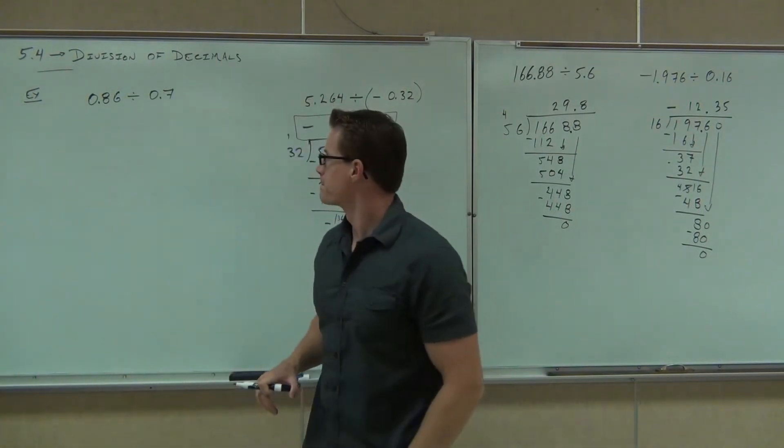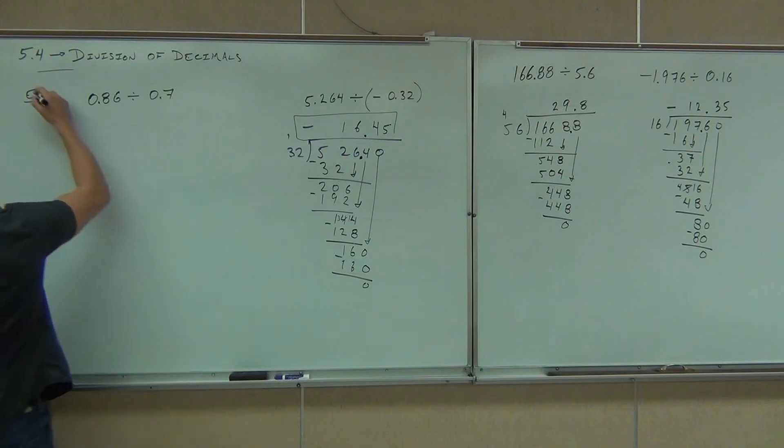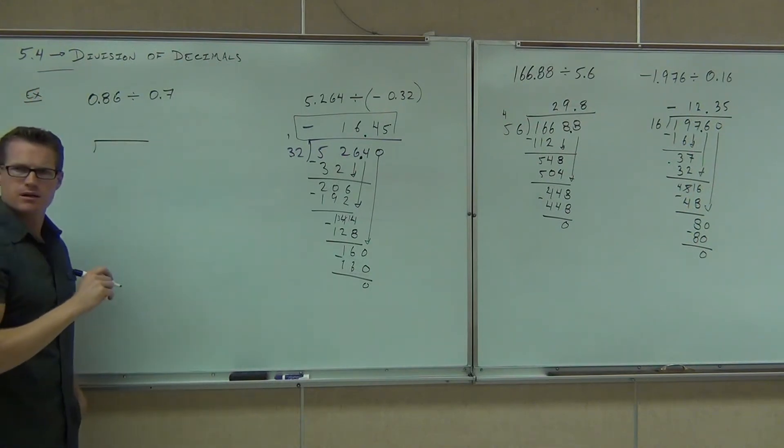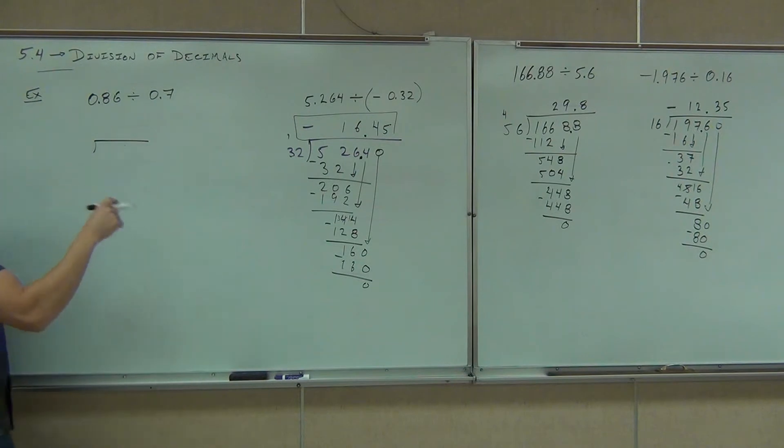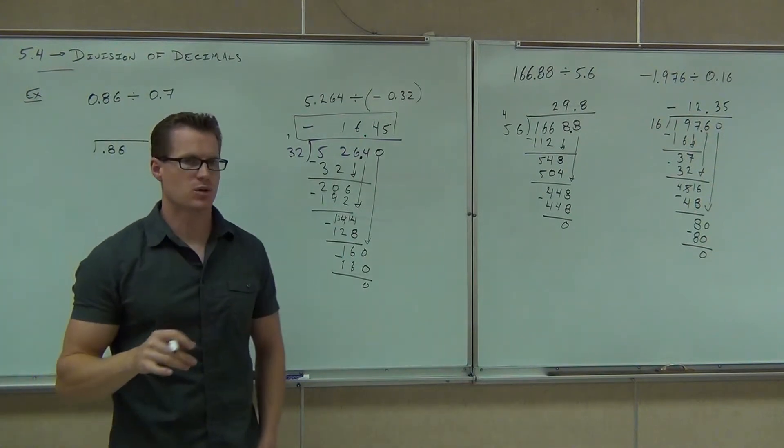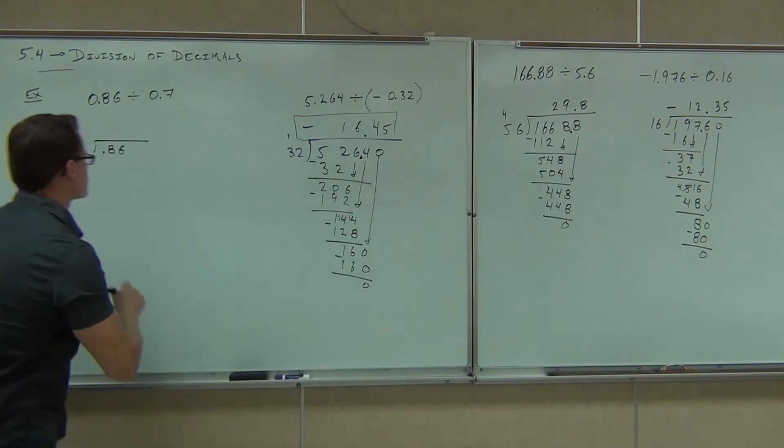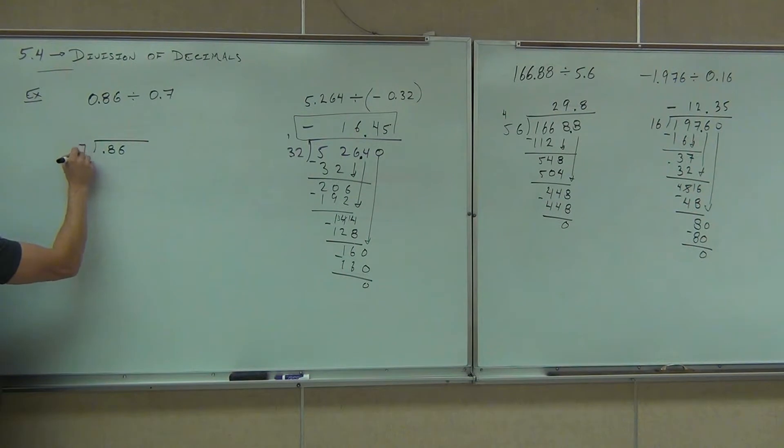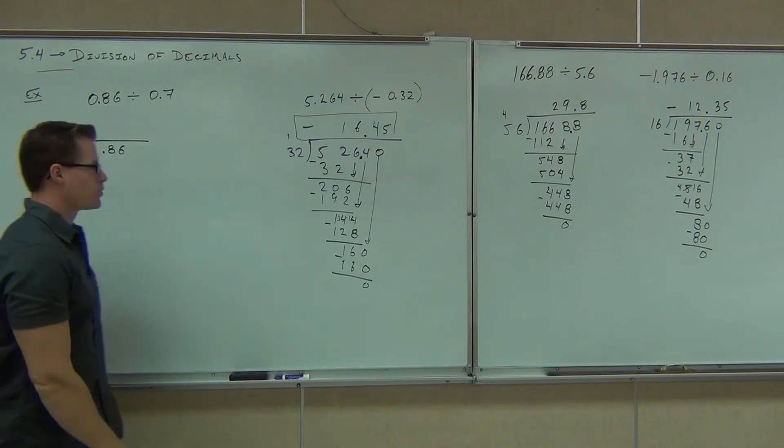Let's try one more. So first thing we're going to do, of course, we're going to make this - what number goes on the inside? 0.86. I'm going to put 0.86 on the inside so that zero doesn't confuse me. On the outside of my division problem, I have 0.7.